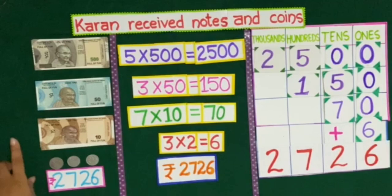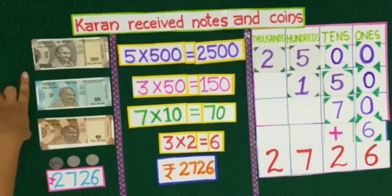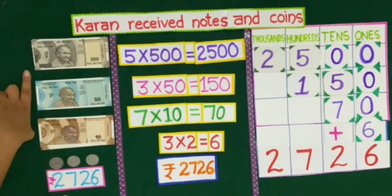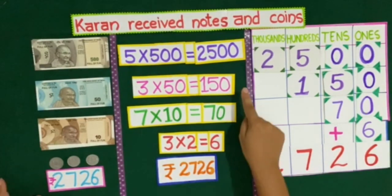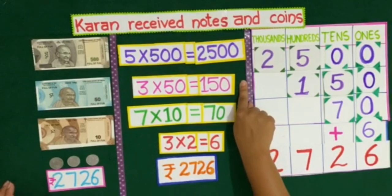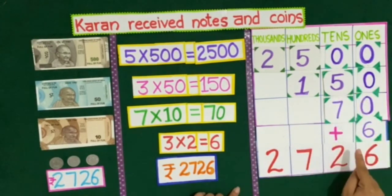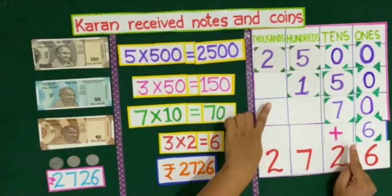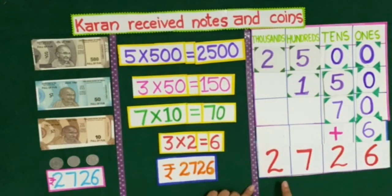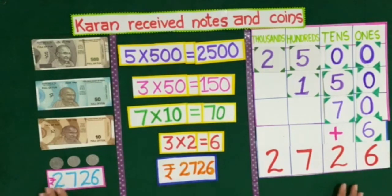So we have found the total amount Karan received on his birthday with different methods. The first method was counting the currency notes, and the total amount was Rs. 2726. In the second method, by making groups, the total amount was also Rs. 2726. And if we add the total amount using a place value chart, the answer will also be Rs. 2726. For your homework, you will solve this question in your notebooks.